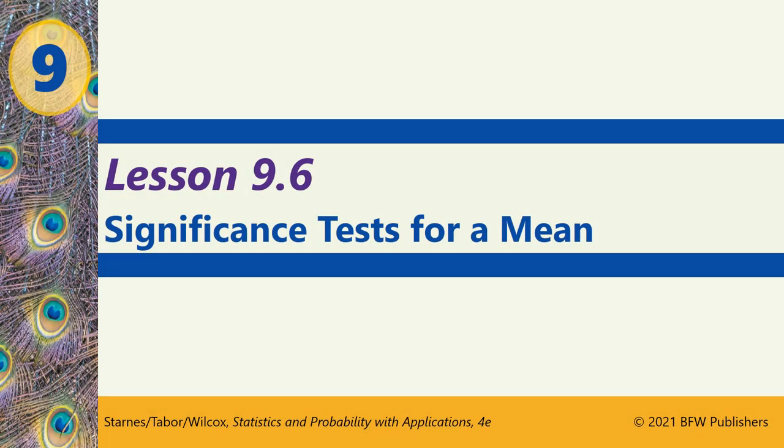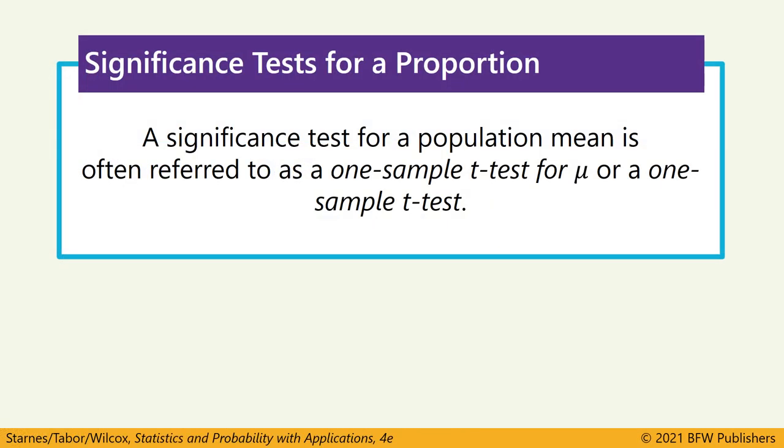Section 9.6, Significance Tests for a Mean. As a reminder, a significance test for a population mean is often referred to as a one-sample t-test for mu, or simply a one-sample t-test.